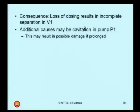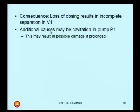An additional cause may also be that pump P1 results in cavitation. The pump P1 has to pump the dosing chemical from tank T1 to tank V1. When there is no flow because of the strainer S1 being choked or blocked, there will be cavitation in the segment of the pipeline where pump P1 is installed. This can be an additional cause resulting from the same deviation 'flow/no.' The consequence of this additional cause could be that the whole line or the pump may get completely damaged if prolonged.